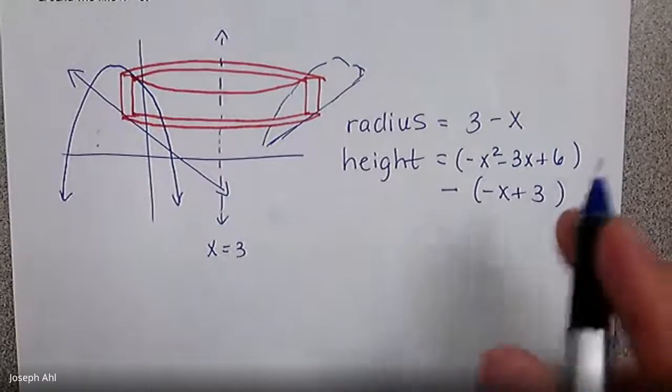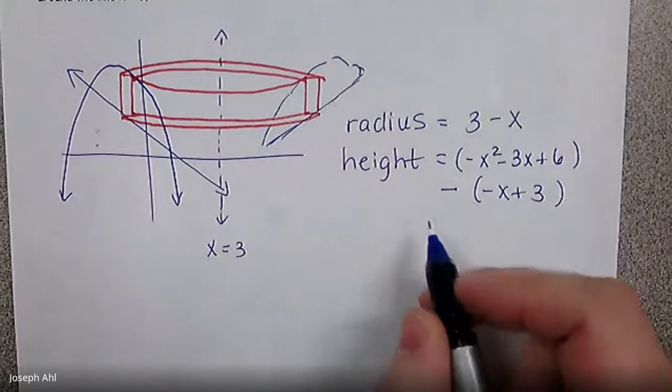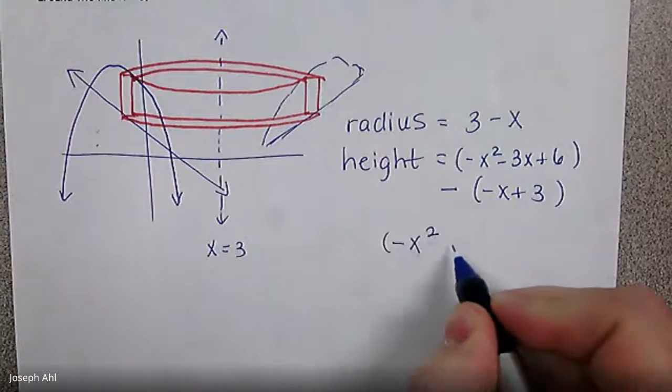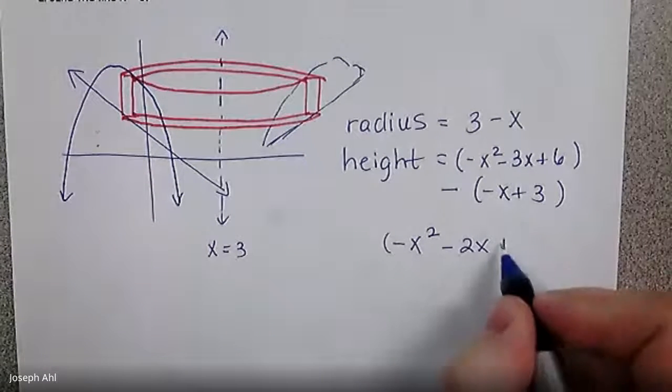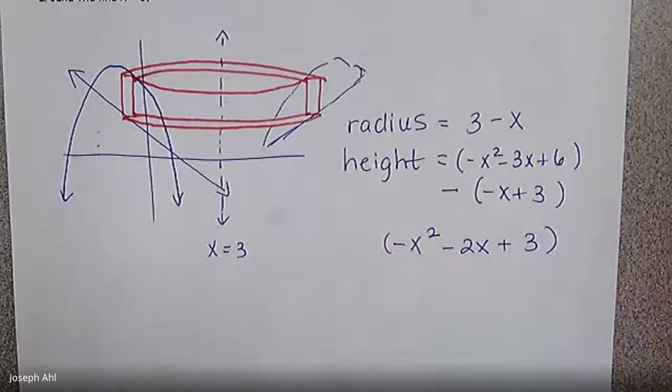And if you combine like terms here, it's going to wind up being negative x squared minus two x with a plus three. So this is the function that represents the height.